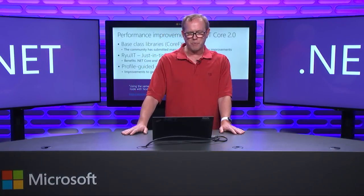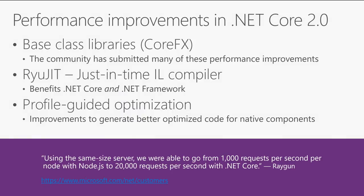Next, let's talk about performance improvements. One of the cool things about being open source is that in places where we don't always have time — because we're always focusing on new web frameworks or new libraries or making it cross-platform — we've had tons of submissions from the community that have fixed performance problems in low-level pieces of .NET that we've never had time to look at. Those are all in .NET Core 2.0.